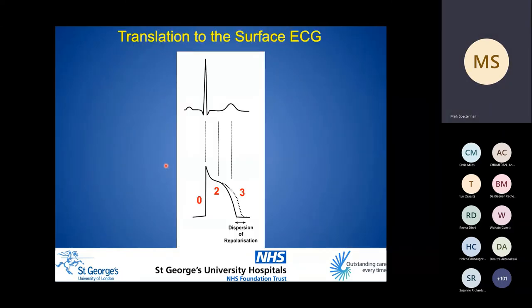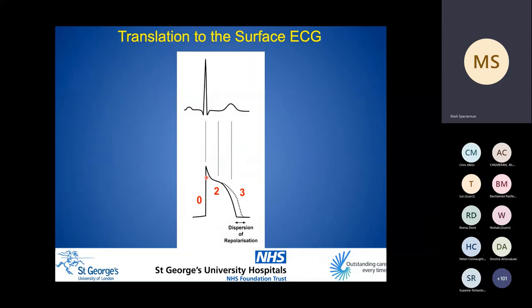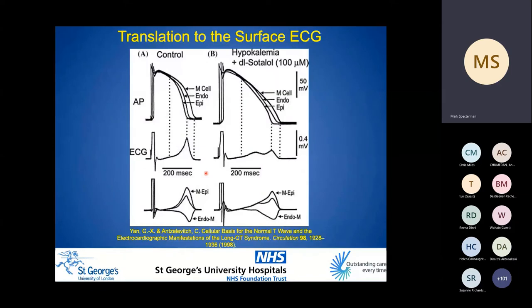The electrical forces driving activation and repolarization across the whole heart are summated and represented on the surface 12-lead ECG. Crudely, the QRS is produced by phase zero of the action potential, the ST segment by phase two, and the T wave by phase three. Dispersion of repolarization time gives rise to a potential difference between spatially distinct areas of the heart, producing the T wave. There is an inherent spatial heterogeneity of repolarization across the myocardium, and models like the canine wedge preparation have demonstrated this transmurally across three layers: the endocardium, mid-myocardial wall, and epicardium.